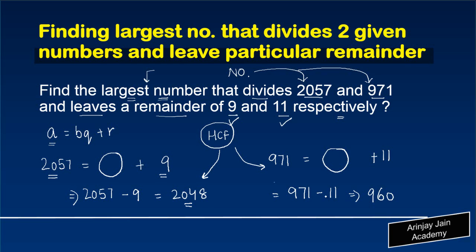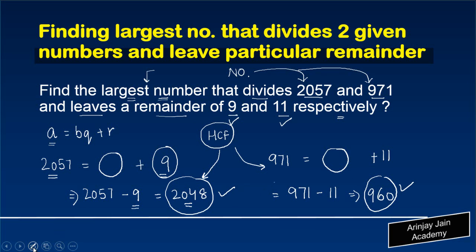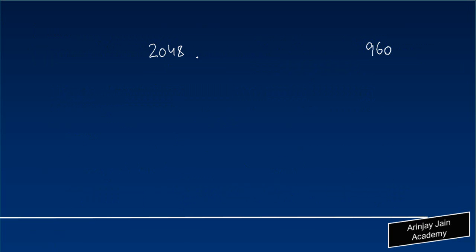The key idea is: whenever a remainder of 9 remains from 2057, if we remove this remainder, whatever is left will be exactly divided by that number. The same applies for 971. So the simple thing we need to find out is which is the largest number that divides both 2048 and 960 exactly — that is, the highest common factor.